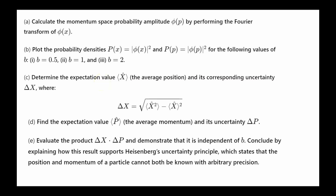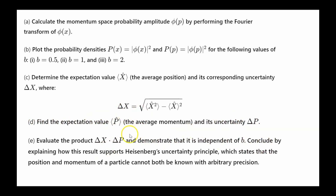Here's the problem I'm going to work through. Part A: calculate the momentum space probability amplitude phi of p by performing the Fourier transform of the given position amplitude phi of x. Part B: plot the probability densities for various values of b. Part C: determine the expectation value of x and its corresponding uncertainty. Part D: find the expectation value of momentum and the uncertainty in momentum. And finally, Part E: evaluate the product of the uncertainty in x multiplied by the uncertainty in p, and demonstrate that it's independent of the parameter b.